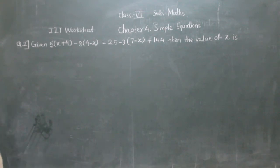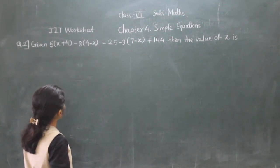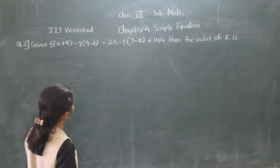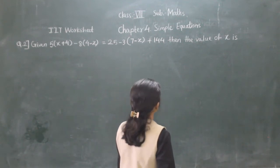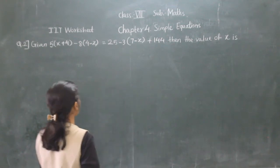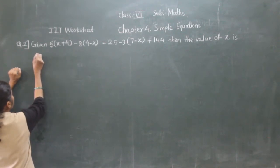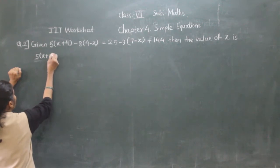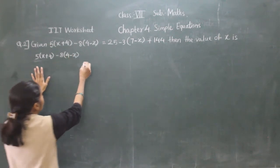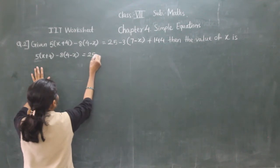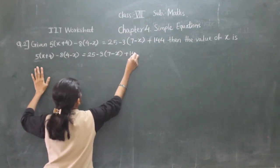Let's move towards question number 2: 5 into bracket x plus 4 minus 8 into bracket 4 minus x is equal to 25 minus 3 into bracket 7 minus x plus 144. The value of x is what we need to find. We have to solve this equation.